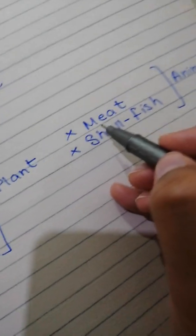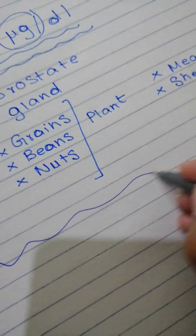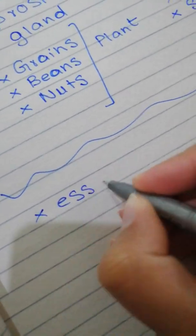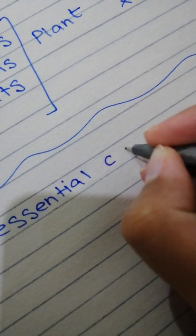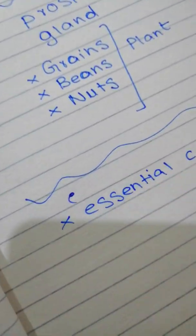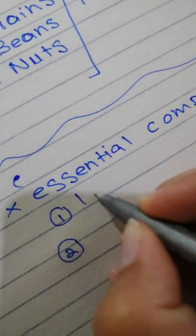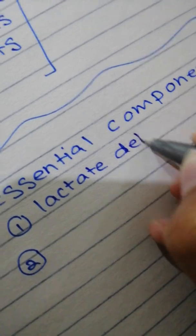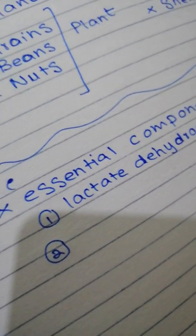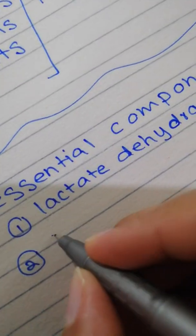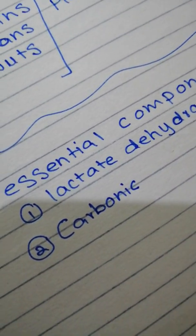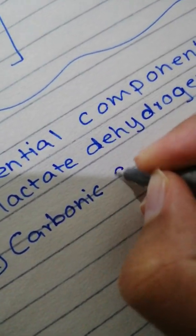Let's now talk about the functions of zinc. Zinc is an essential component of many enzymes. You have to remember at least two: lactate dehydrogenase, which has to do with anaerobic respiration when we get lactate as a metabolite, and carbonic anhydrase, which has to do with the formation of carbonic acid via CO2 and H2O.